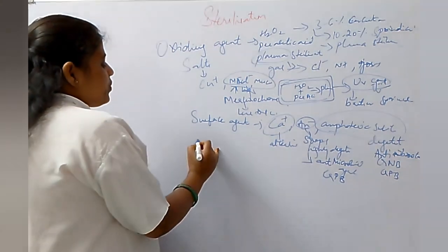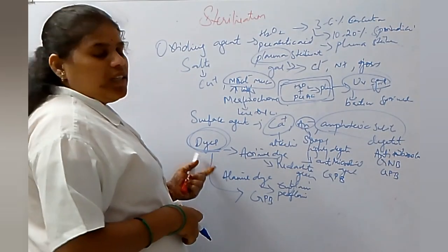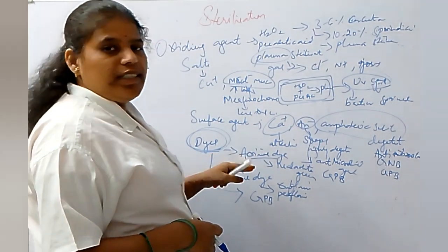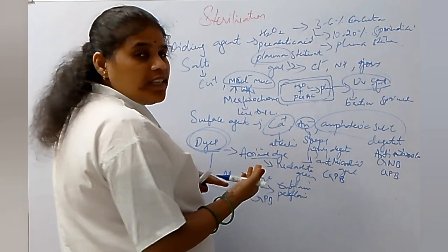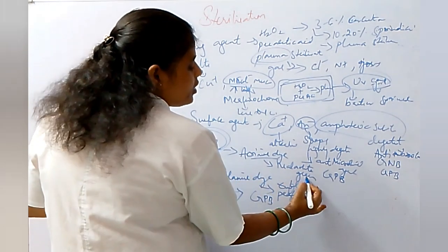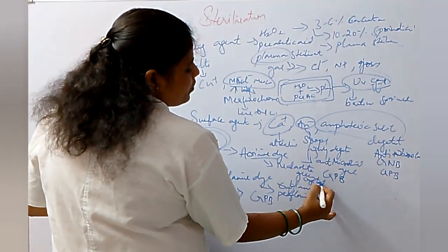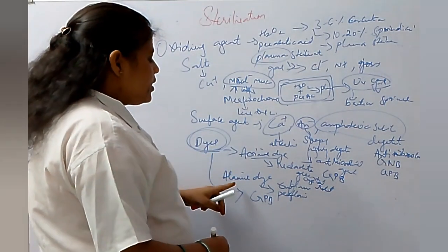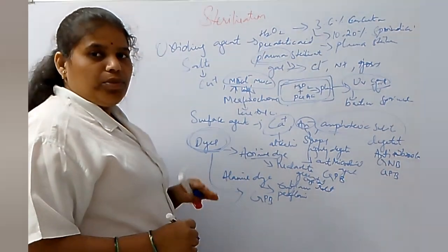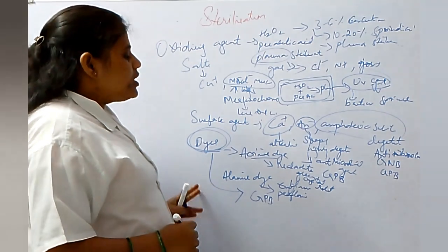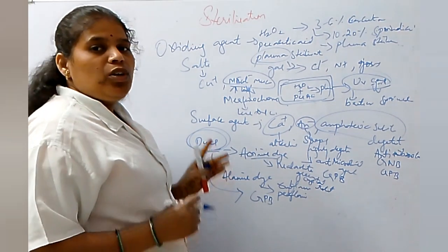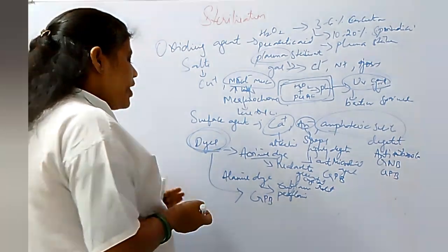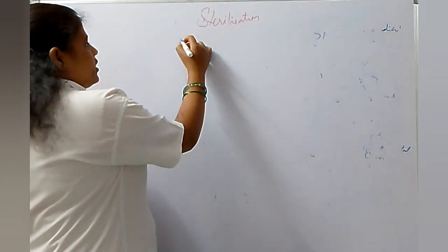Next we have dyes. We have acridine dyes and aniline dyes. Acridine dye examples are malachite green and crystal violet — crystal violet is used for gram staining. Aniline dyes include acriflavine and proflavine. Both dye types affect gram-positive bacteria more than gram-negative.